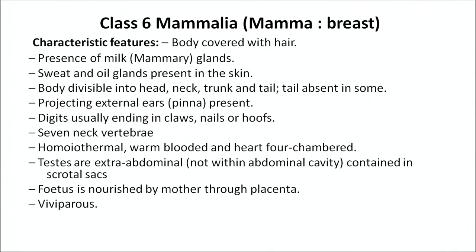The next class is Mammalia — 'mamma' means breast. Body is covered with hair. They have mammary glands which provide milk to their offspring. Sweat and oil glands are present in the skin. Body is divisible into head, neck, trunk, and tail — tail is absent in some. Projecting external ears called pinna are present. Digits usually end in claws, nails, or hooves. Dentition is thecodont — teeth are in sockets of jaw bones — and generally heterodont with four different types of teeth. They have 7 neck vertebrae, are homeothermal and warm-blooded, and heart is four-chambered. Testes are extra-abdominal in scrotal sacs. They are viviparous — they give birth to young. Some primitive mammals are oviparous. Fetus is nourished through the placenta.